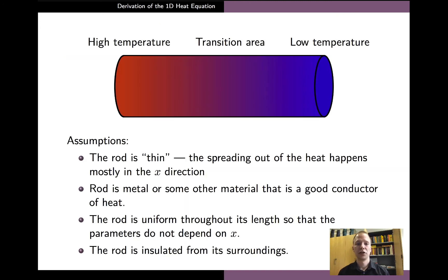In the derivation, we make certain simplifying assumptions. First of all, we assume that the rod is thin in the sense that the spreading out of the heat happens mainly in the direction along the length of the rod.